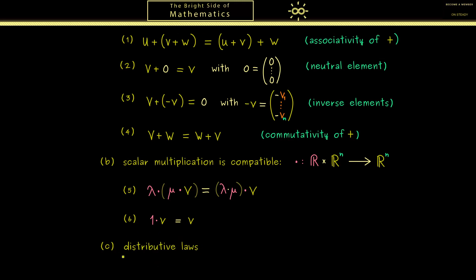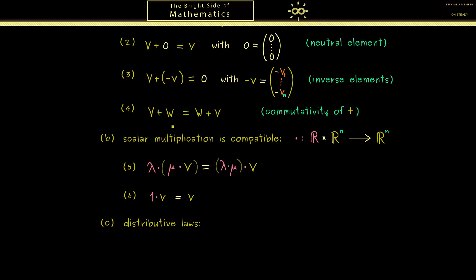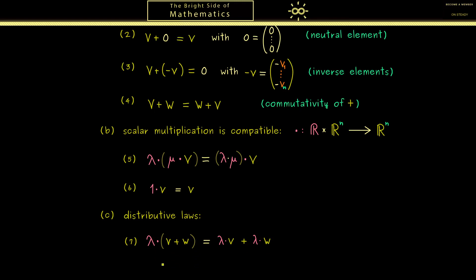Indeed, they can be summarized as distributive laws. Hence this means now we connect the scalar multiplication with the addition. So property 7 says lambda times (v plus w) is the same as lambda times v plus lambda times w. So in summary, first scaling then adding is the same as first adding and then scaling.